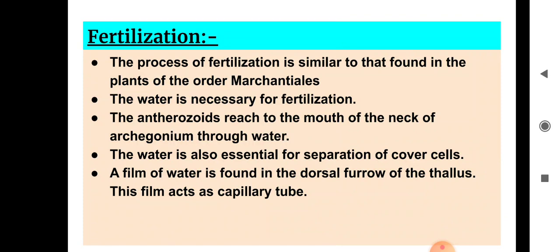Similarly, this process is seen in Sphaerocarpos. Water is necessary for fertilization because these are the amphibians of the plant kingdom — they require water for fertilization. The antherozoids reach the mouth of the neck of the archegonium through water.